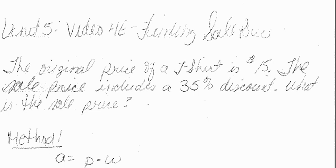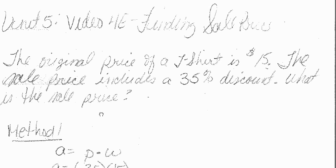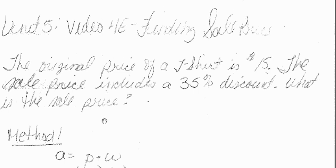Okay, and finally in example 3, we have a $15 t-shirt on sale for 35% off. So what we're going to do to figure out what the sale price of the t-shirt is - here is method 1 - we're going to use a equals p times w.